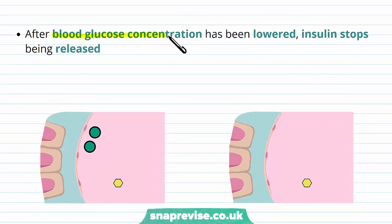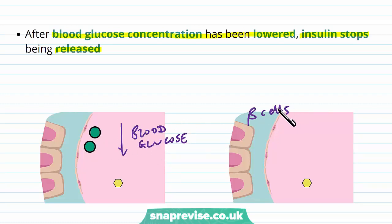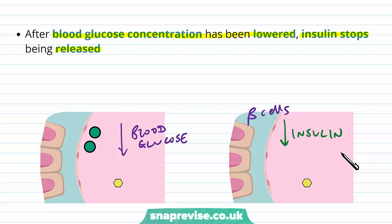After the blood glucose concentration has been lowered, insulin is stopped from being released, and everything goes back down to normal. At this point, the insulin has done its action and the blood glucose has gone back down. So the beta cells stop releasing insulin because there's no need for it. The insulin level goes down until the demand for it goes up again — for example, after the next meal.